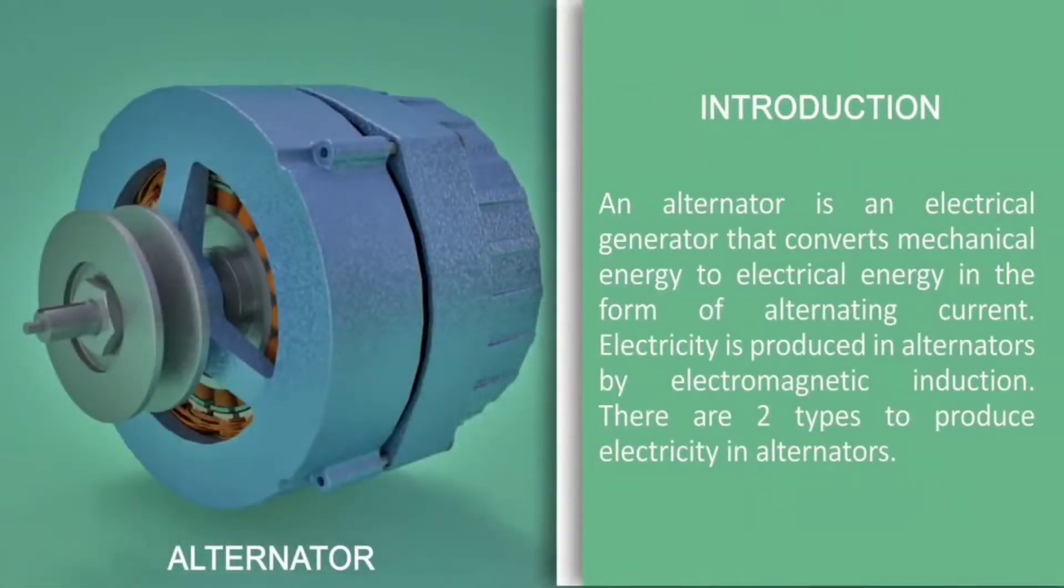An alternator is an electrical generator that converts mechanical energy to electrical energy in the form of alternating current. Electricity is produced in alternators by electromagnetic induction. There are two types to produce electricity in alternators.